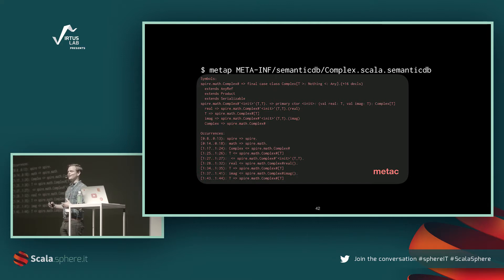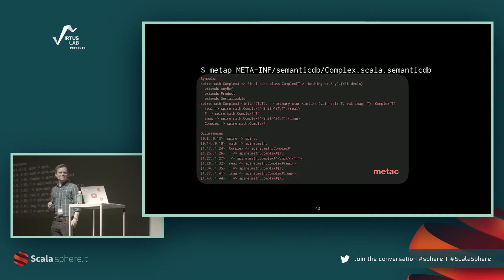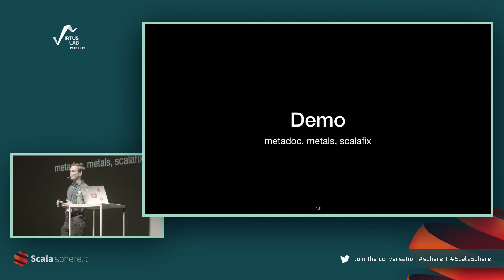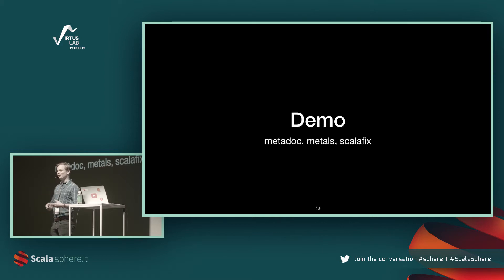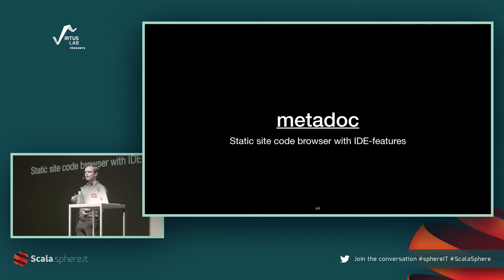metaC produces the full breadth of both symbols and occurrences. I hope you now understand the difference between metaC, metaCP, and metaP. For the rest of the talk I'm just going to show demos. I'll talk about three projects: Metadoc, Metals, and ScalaFix. I've put Metadoc first because it's the least known project but in my opinion one of the coolest applications of SemanticDB. Metadoc is a static site generator.